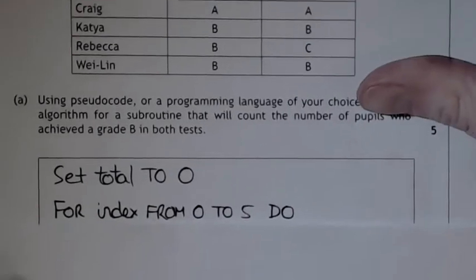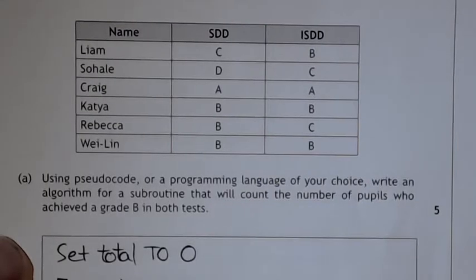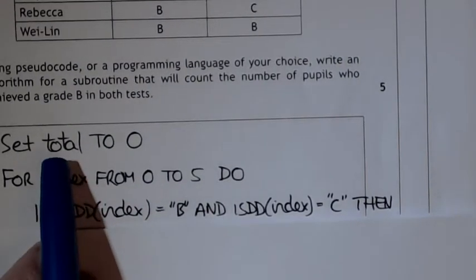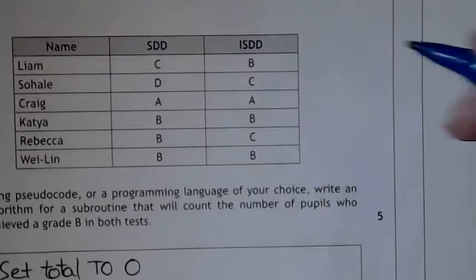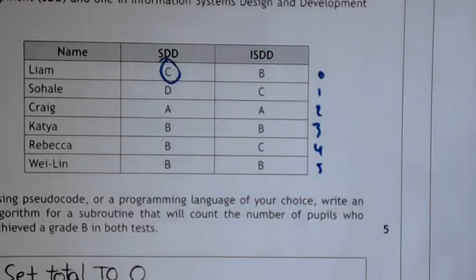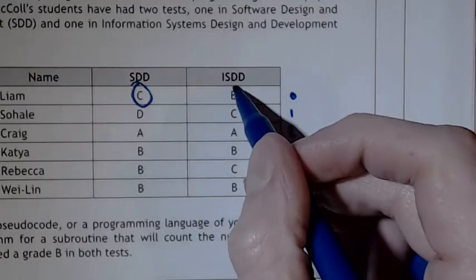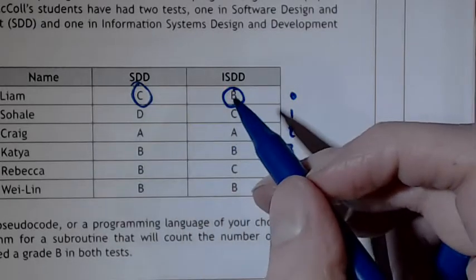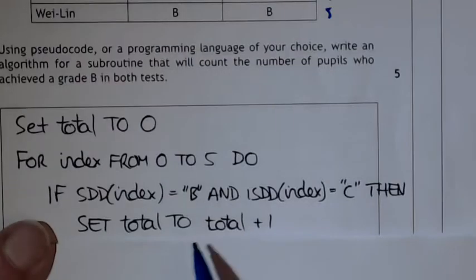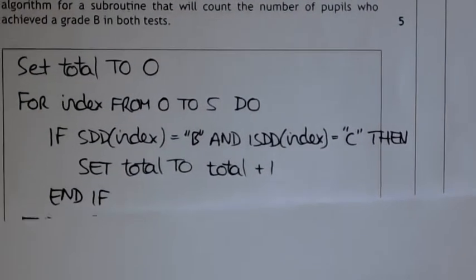Think of this as being the two separate arrays, starting at element zero — so zero, one, two, three, four, five. That's why we've got from zero to five. If the index at position zero has a C, and the index position zero in the other array has a D, that's not a B. But if it is a B, then you'd actually add one to the counter. If these values are B's, just add one to the counter — set total to total plus one. Then that's your end if and your end for.